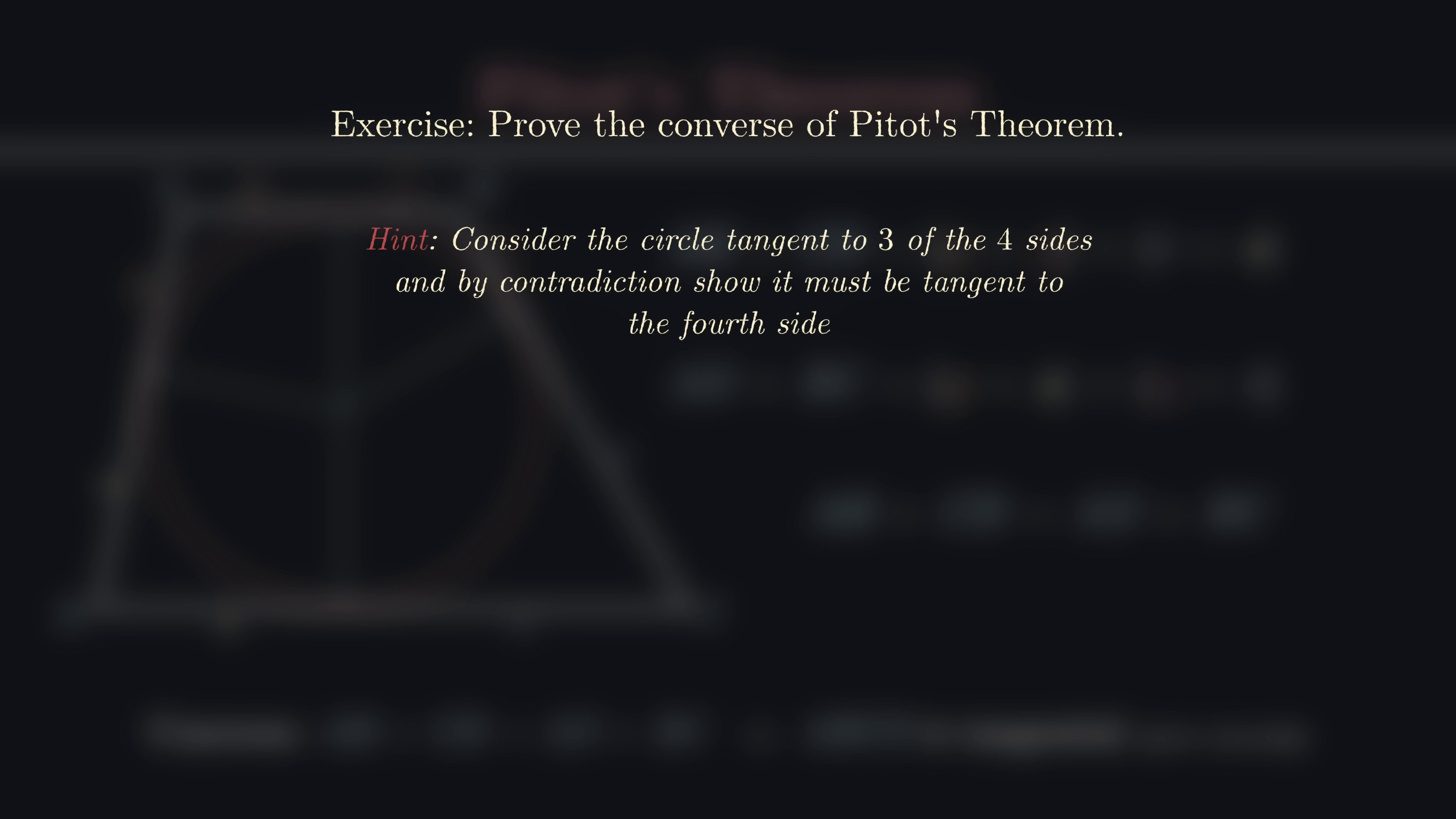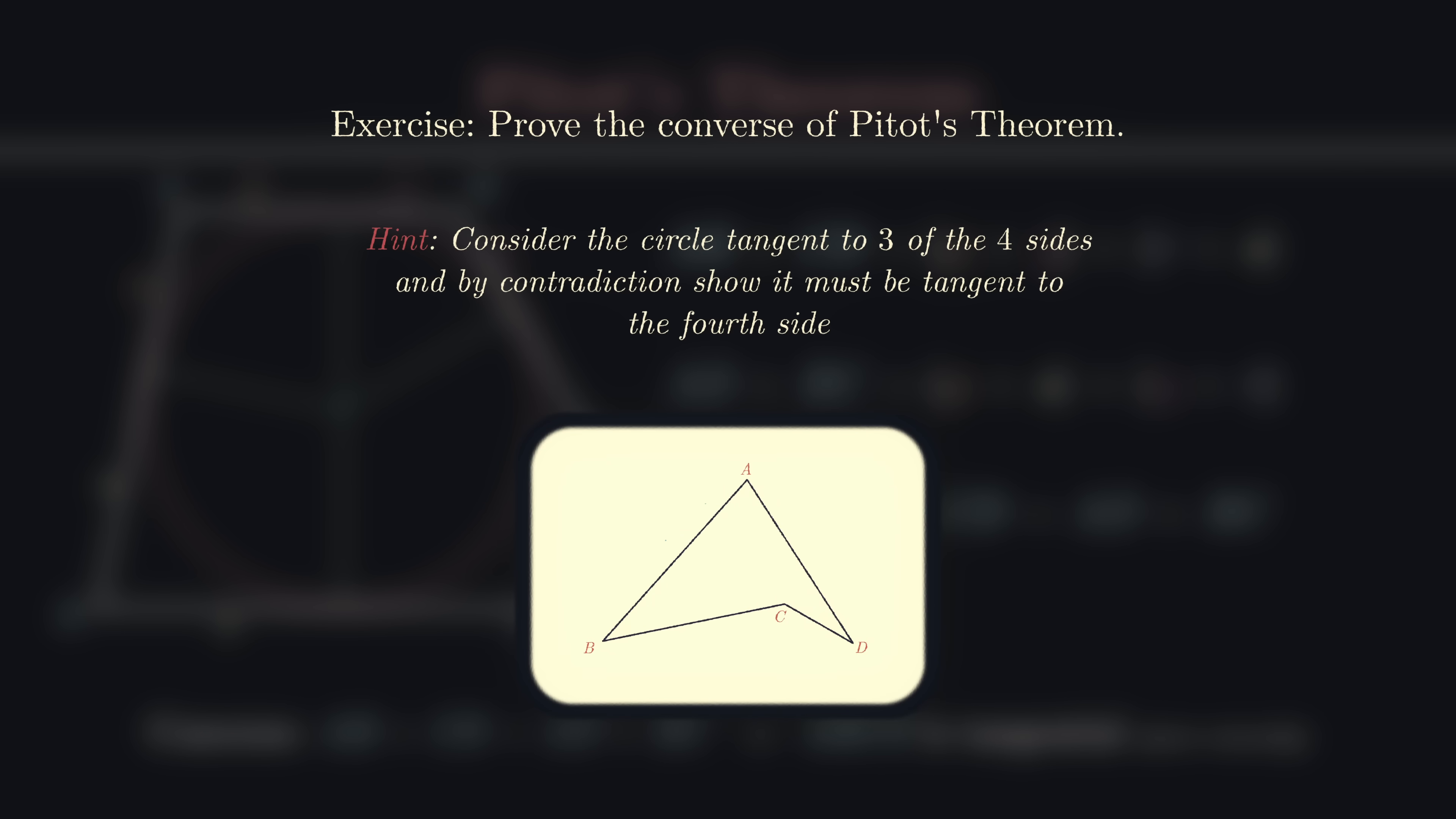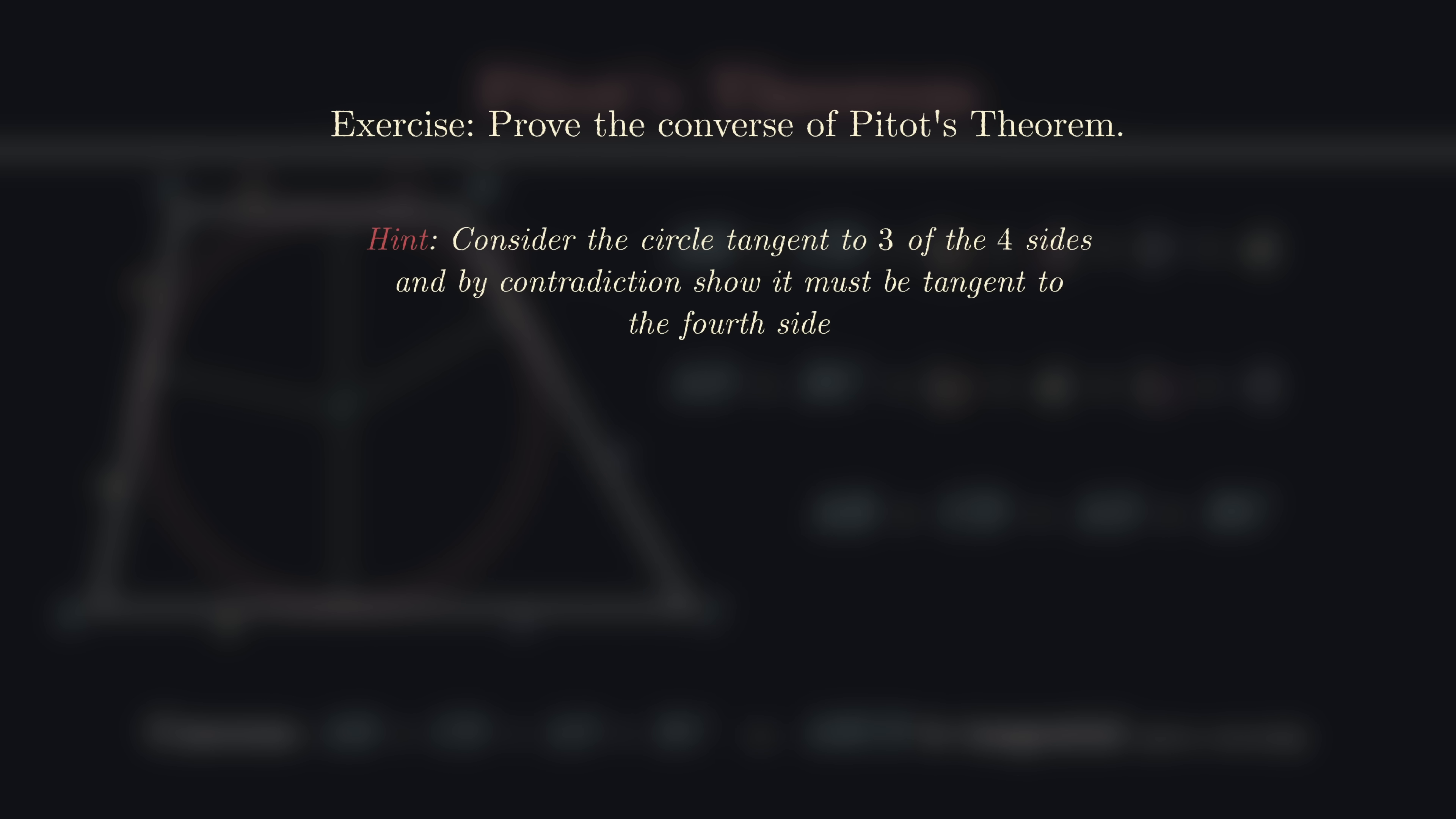This is a part of the problem where it's important that our quadrilateral is in fact convex, as this proof won't work if our quadrilateral is concave. We can now say that a convex quadrilateral ABCD is tangential if and only if AB plus CD equals AD plus BC.